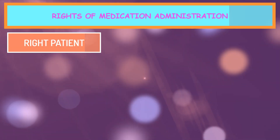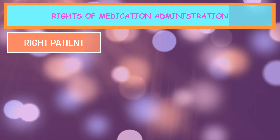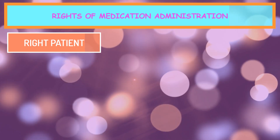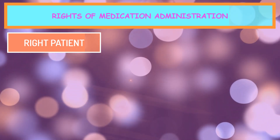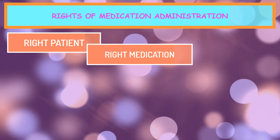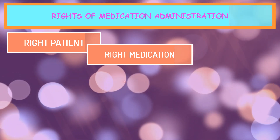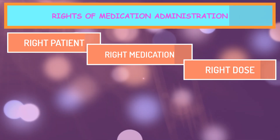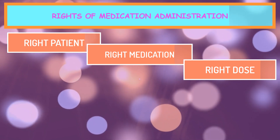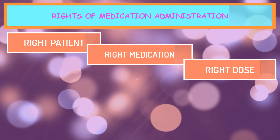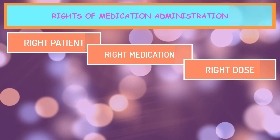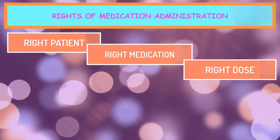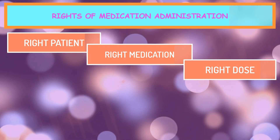The first right is right patient. Remember to ask the patient their first and last name, and you have to go by two identifiers — ask for their date of birth and look at the order to see if it matches that patient. The second is right medication: does the medication label match the order? Be very vigilant with look-alike and sound-alike medications. The third is right dose: does the strength and dosage match the order? For example, if the medication order is for metoprolol 25 milligrams and you only have 50 milligram tablets, you know that medication has to be scored.